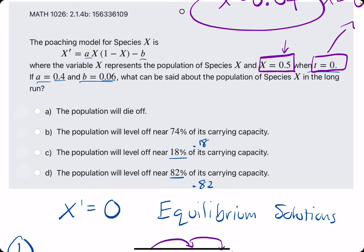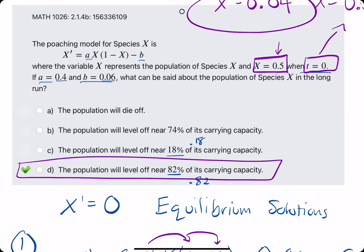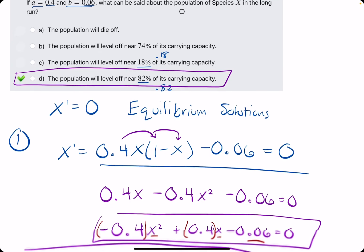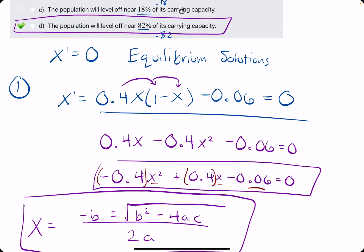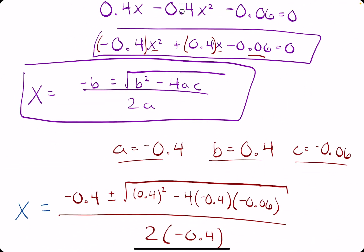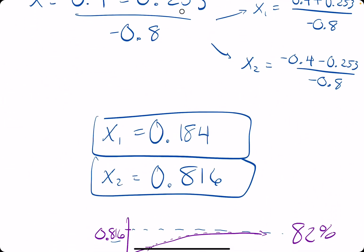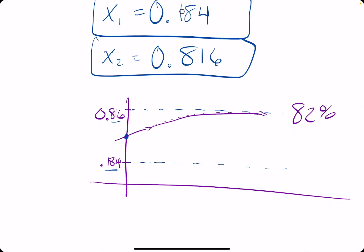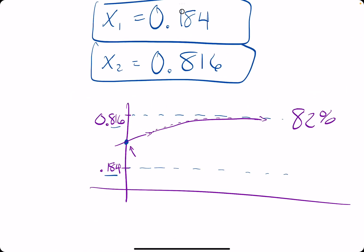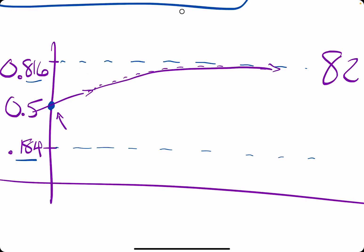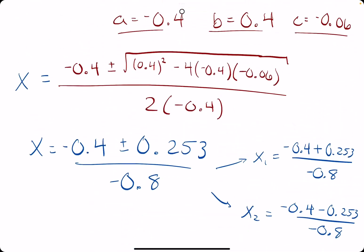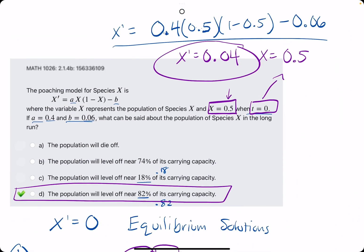Since the slope is positive, the solution travels upward and eventually levels out at 0.816, which is 82% of its carrying capacity. To summarize: find equilibrium solutions by plugging in A and B, setting X prime equal to 0, and using the quadratic formula. Graph them, plot your initial condition, then plug in A, B, and the initial X value to find the slope — positive or negative — to determine which equilibrium solution it approaches in the long run.